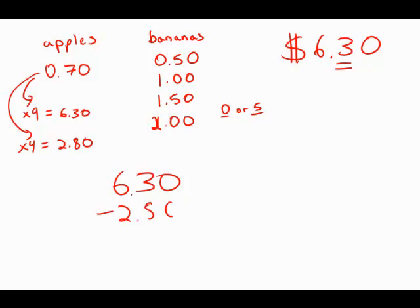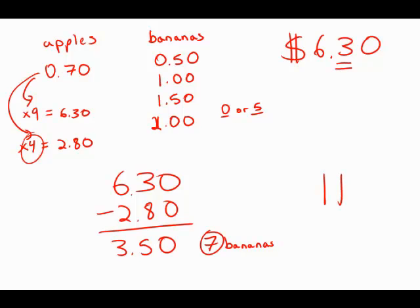Subtract that from $6.30 and what I get is $3.50 to be spent on bananas. Well, that would be seven bananas. And so if I have four apples and seven bananas, that means I get 11 pieces of fruit total. And this is answer choice B.